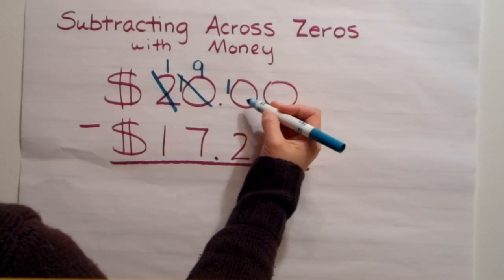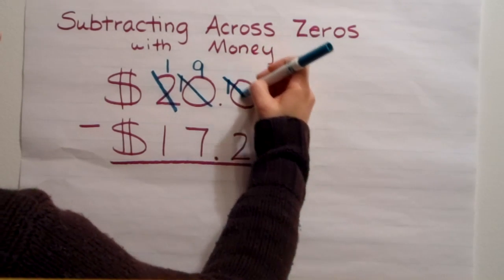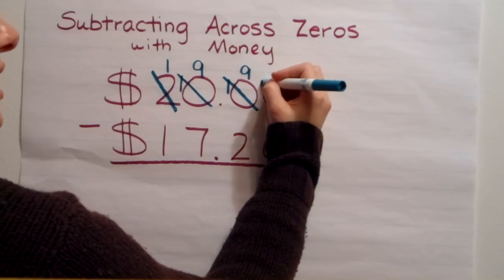Now that I have ten in the tenths place, that still didn't help me in the hundredths. Let me cross it out again. It's going to become a nine. That one group is going to come over.